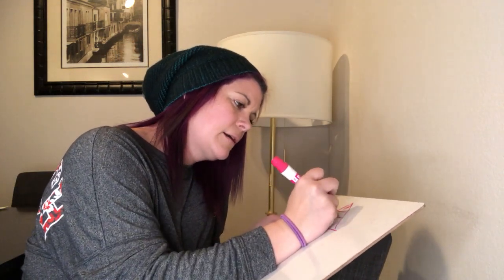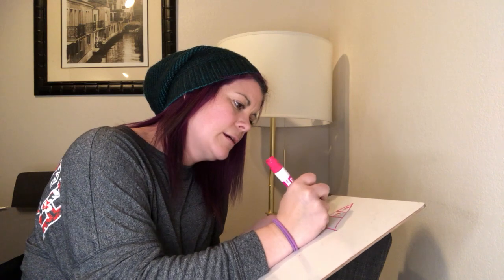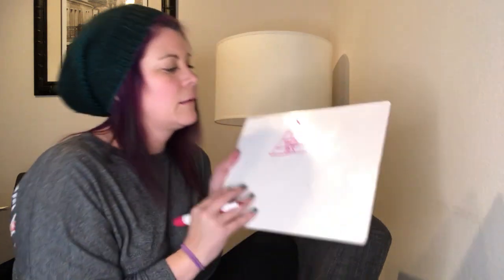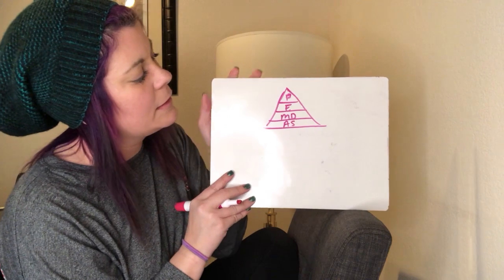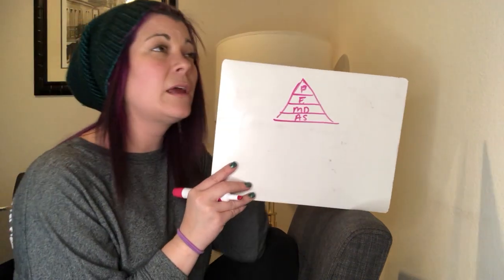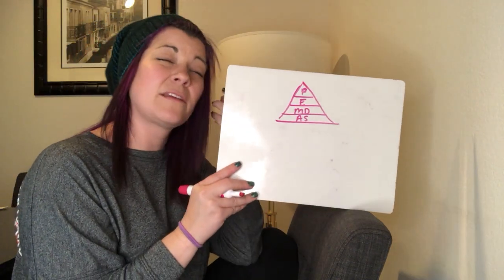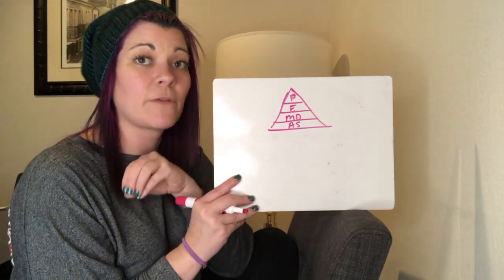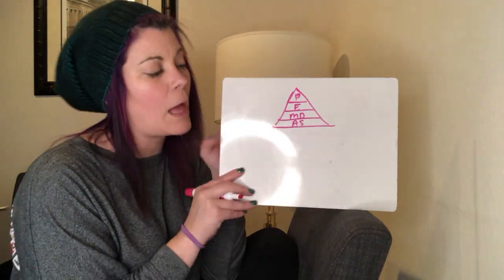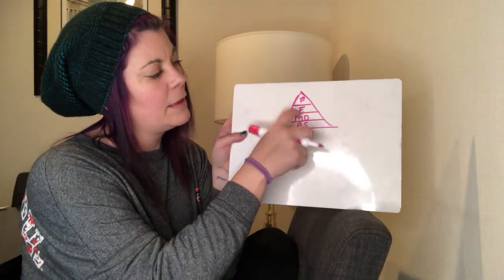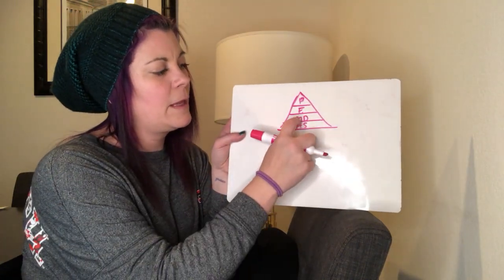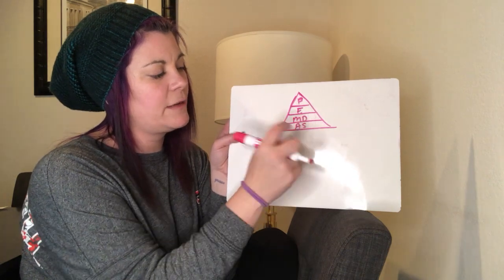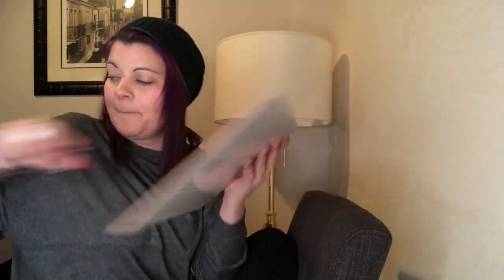P stands for parentheses — and if there's more than one operation inside the parentheses, you have to follow order of operations within the parentheses as well. E stands for exponents. M is multiplication, D is division, A is addition, and S is subtraction.